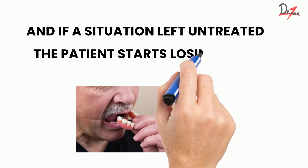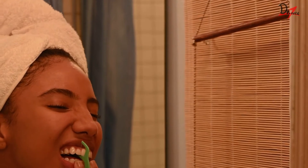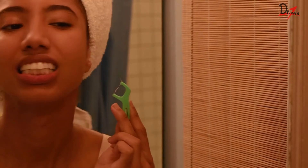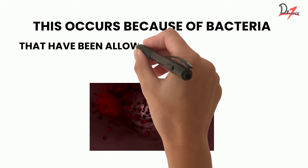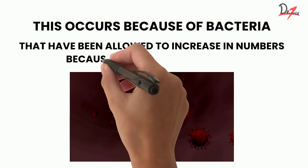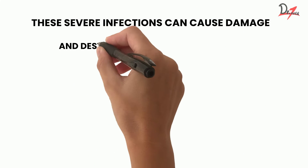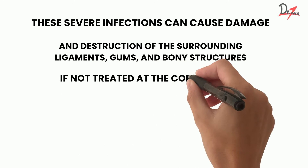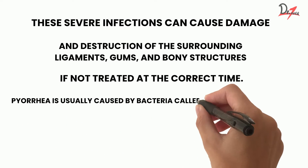If this situation is left untreated, the patient will start losing their teeth. Many times people do not pay proper attention to the cleanliness of their teeth, and in such a situation problems related to teeth start. Pyorrhea is one of those problems. It occurs because of bacteria that have been allowed to increase in numbers due to poor oral hygiene. These severe infections can cause damage and destruction of the surrounding ligaments, gums, and bony structures if not treated at the correct time.